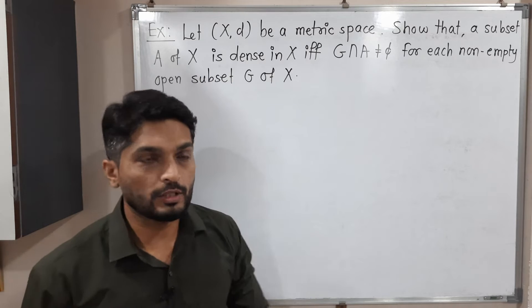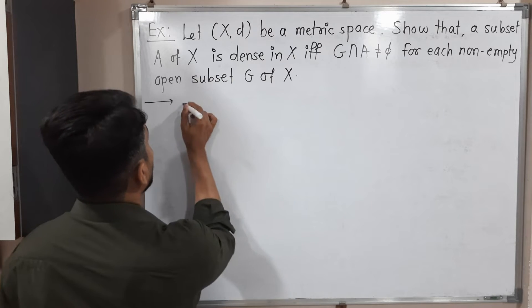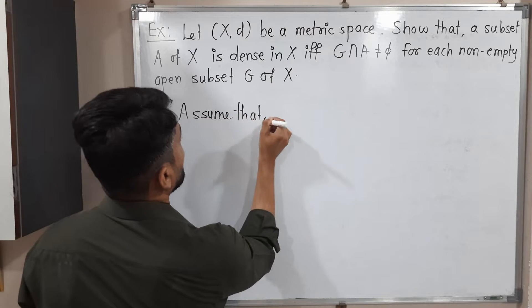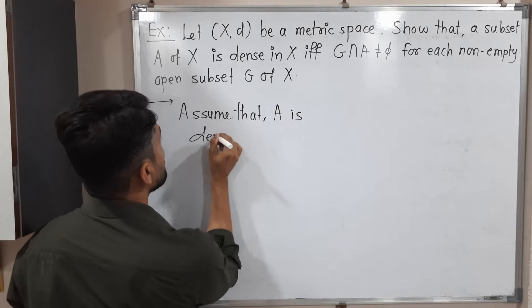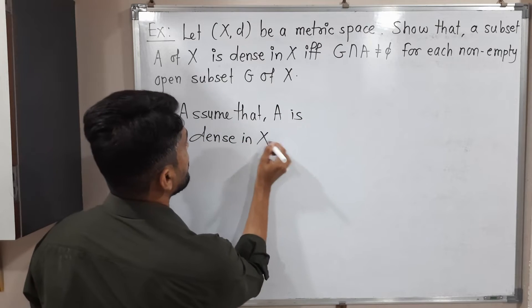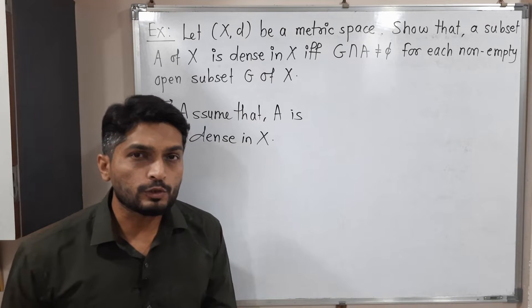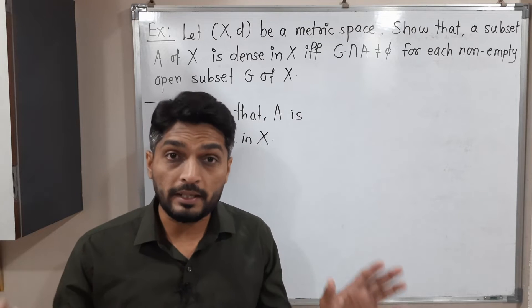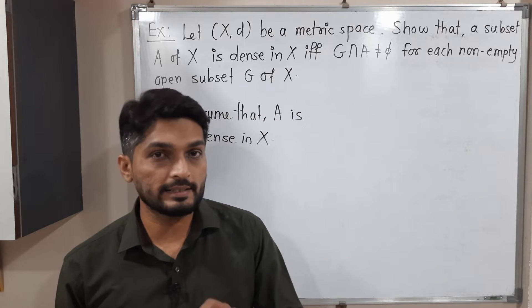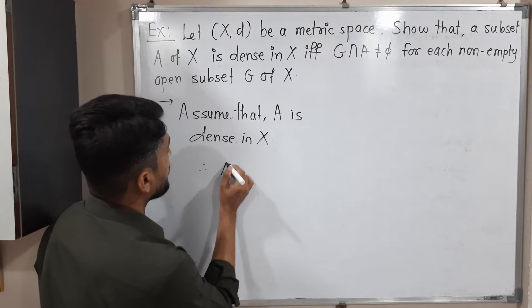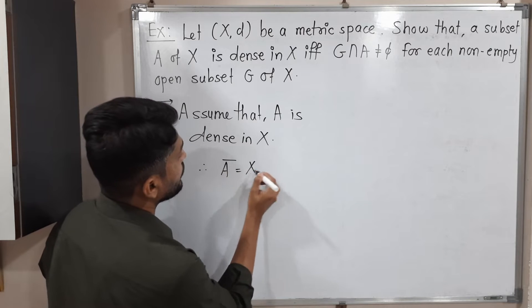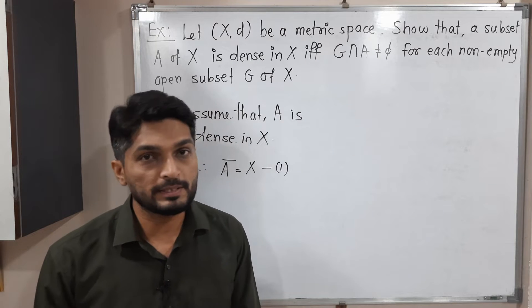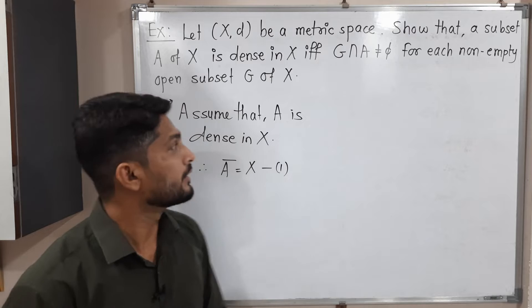Let us start by assuming A is dense in X. Do you know the definition of a dense set? When we say a set is dense, if the closure of that set is the entire metric space X, then we say it is a dense set. So A is dense, therefore we can write Ā equals X — closure of A equals the entire metric space X. This is the given assumption.